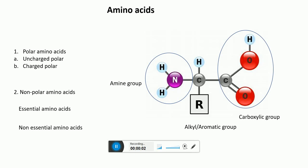Hello everyone. In this lecture today I'm going to talk about mnemonics to remember amino acid classification. Before I discuss the mnemonics, let me give a brief introduction of amino acids. They are organic compounds and the building blocks of proteins. They consist of an amine group, an alkyl or aromatic R group, and a carboxylic acid group — simple compounds of carbon, hydrogen, oxygen, and nitrogen.